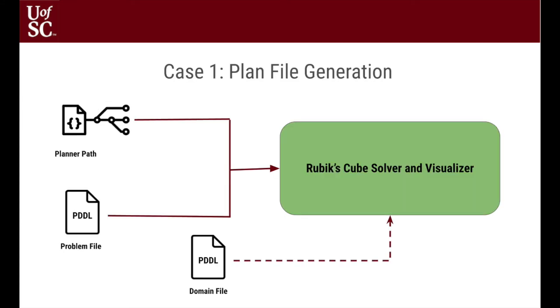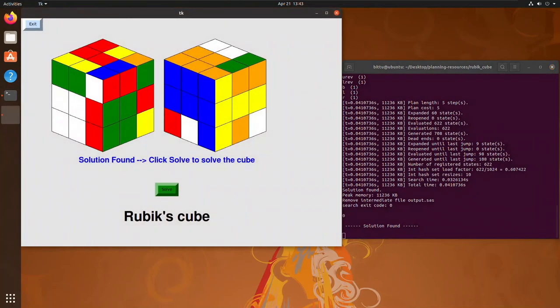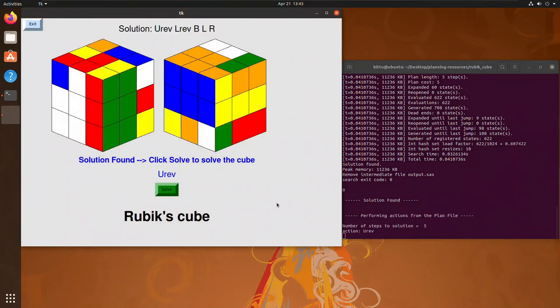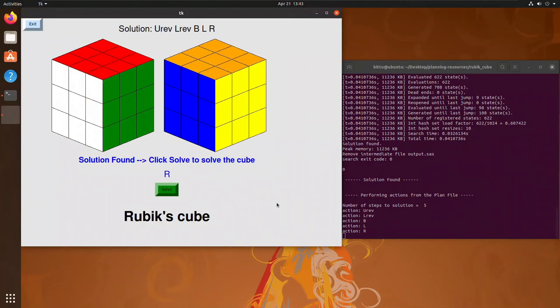Now let us look at the working of our system for case 1. In our demo we have made use of the fast downward planner. The input arguments are the planner path along with the PDDL problem file. Once the solution is found, the visualizer is automatically invoked and the user can click solve to see the steps performed in order to reach the goal state.